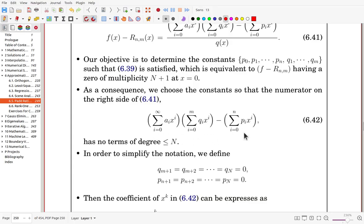And the coefficient is 0, so that it will be 0. So first non-zero term is now x to the capital N plus 1. So we try to choose p and q in that way.